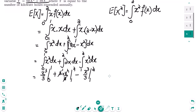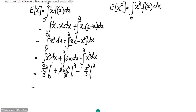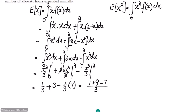Putting in the limits: the first term gives 1/3. The second term gives 2² − 1² = 3. The third term gives (8 − 1)/3 = 7/3. Combining with a common denominator of 3: (1 + 9 − 7)/3 = 3/3 = 1. So the value of E[x] is 1.